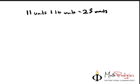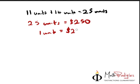Now that we know it's 25 units, it equals how much? 25 units equals $250. Therefore, 1 unit equals $250 divided by 25. Very good. So 1 unit equals $10.